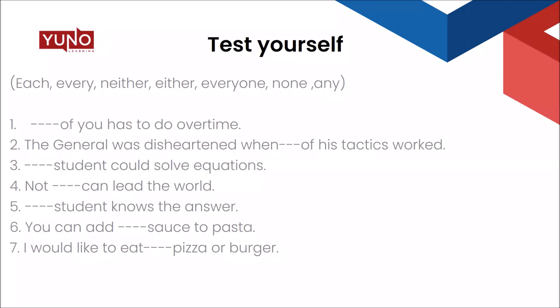Second: 'The general was disheartened when __ of his tactics worked.' The sentence has a negative connotation, so we need a negative word: 'The general was disheartened when none of his tactics worked.' Third: '__ student could solve equations.' This can take multiple correct answers — 'each student,' 'every student,' or 'each and every student could solve equations' are all acceptable.